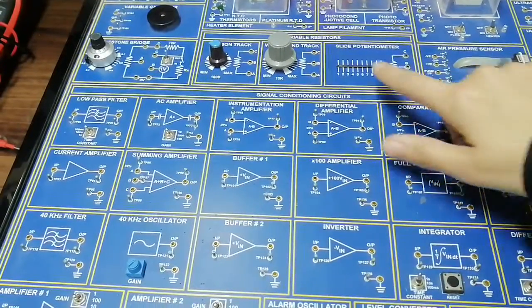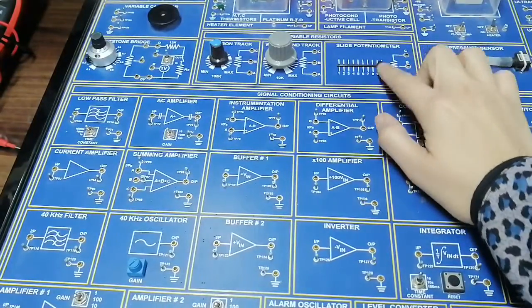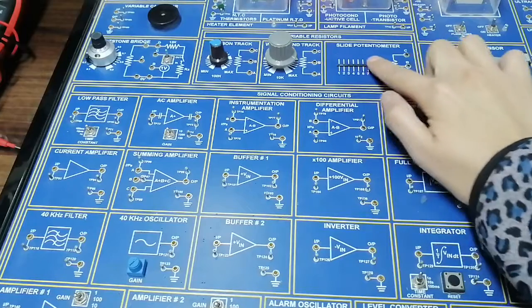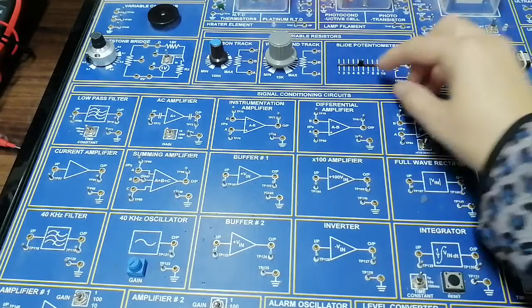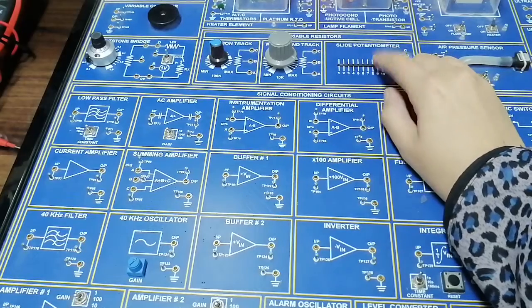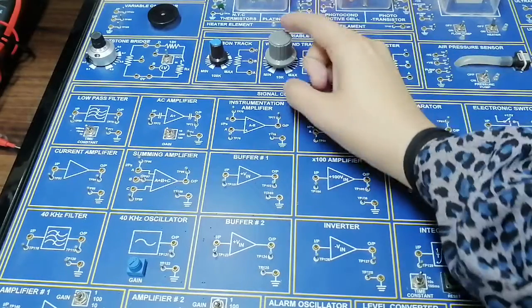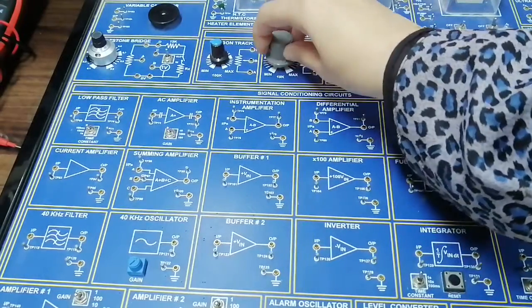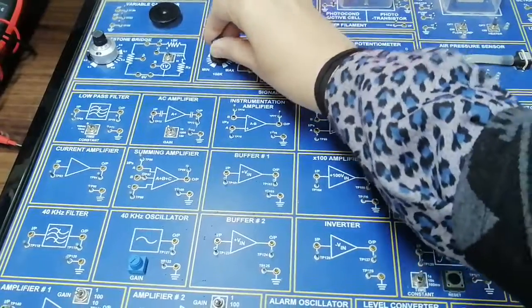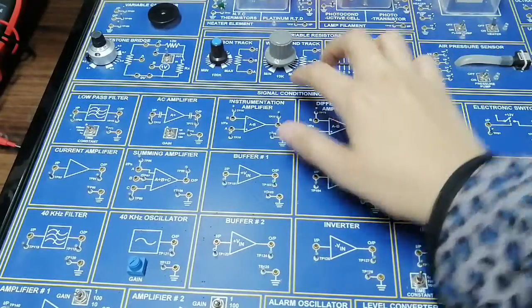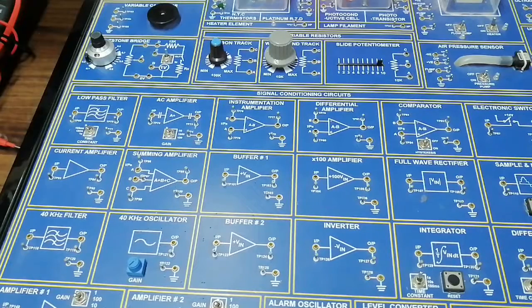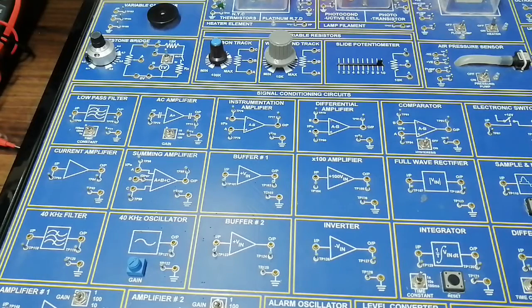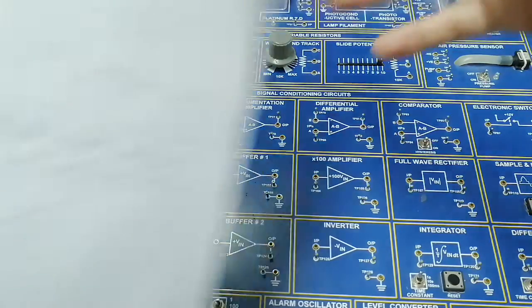Aap ka slide potentiometer - it's clear from the name that you are changing the resistance with the help of sliding this knob. These are your rotary potentiometers. Similarly, yeh bhi aap ka hai, but one of them is wire wound and the other is carbon track. We will be covering the method of how these potentiometers are functioning.